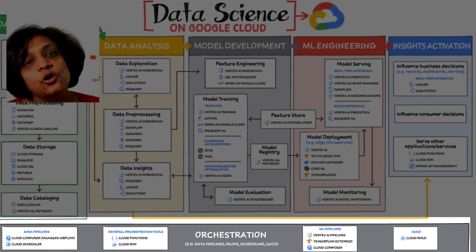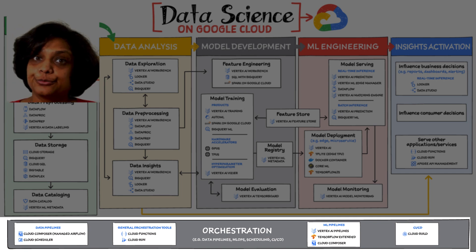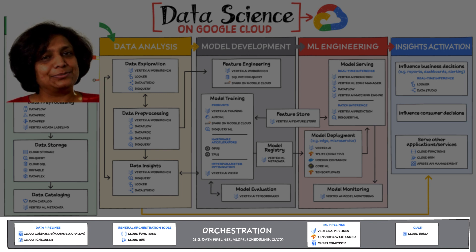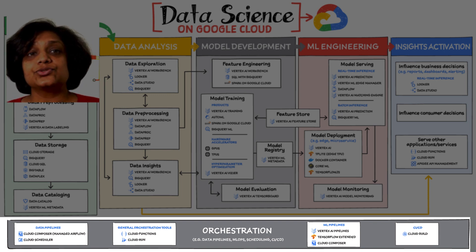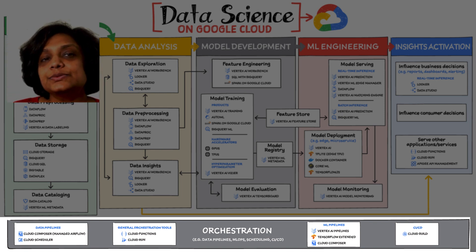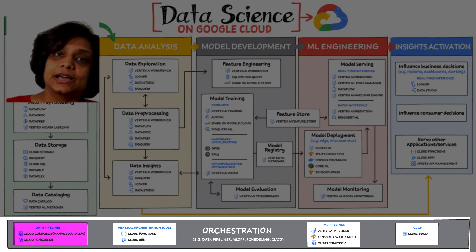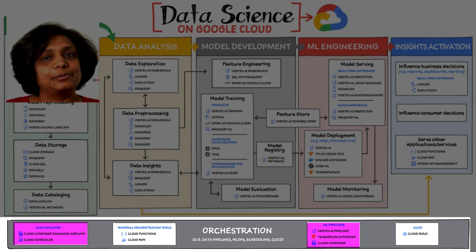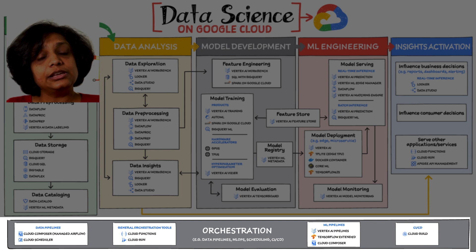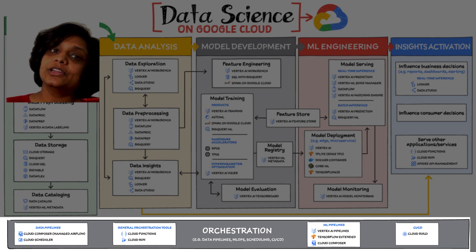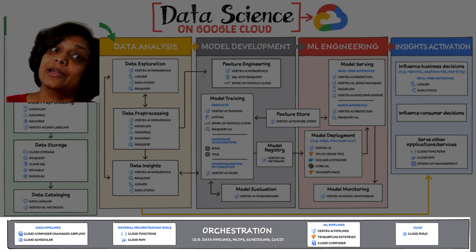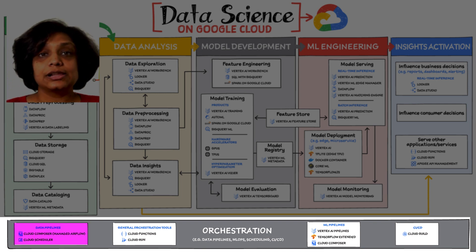Sixth is orchestration. All of the capabilities discussed so far provide the key building blocks to a modern data science solution. But a practical application of those capabilities requires orchestration to automatically manage the flow of data from one service to another. This is where a combination of data pipelines, ML pipelines, and MLOps comes into play. Effective orchestration reduces the amount of time it takes to reliably go from data ingestion to deploying a model in production in a way that lets you monitor and understand your ML system.